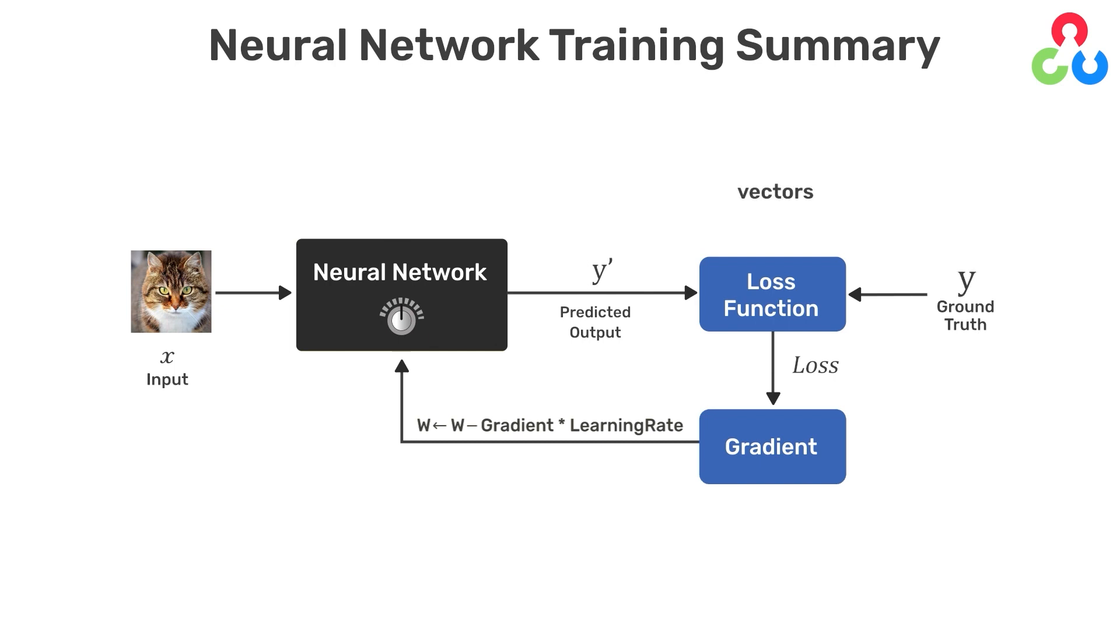And notice that we don't specifically show multiple outputs from the network, but it should be understood that both Y prime and Y are vectors whose length is equal to the number of classes that the network is being trained for. After we compute the loss, we can compute the gradient of the loss with respect to the weights, which can then be used to update the weights in the network. So this is a nice way to summarize at a very high level the process for training a neural network.